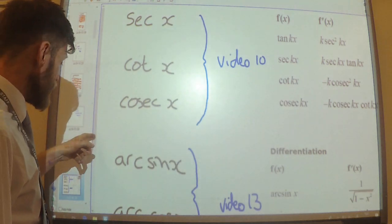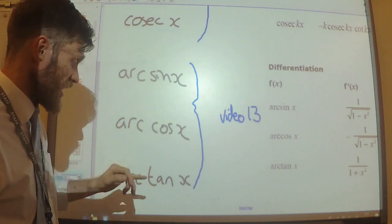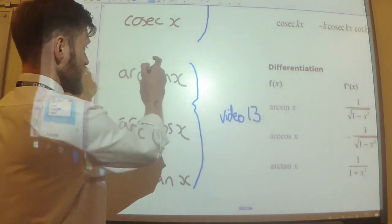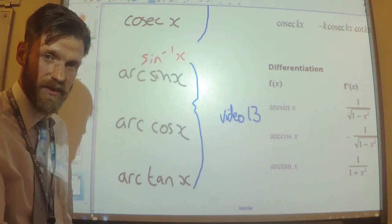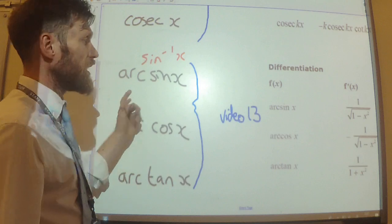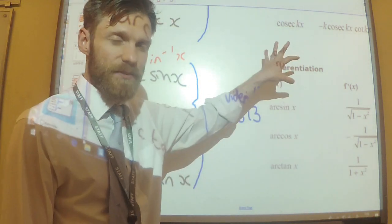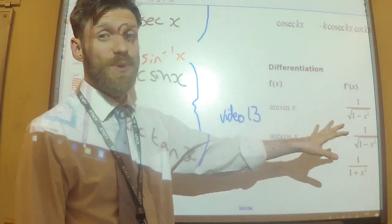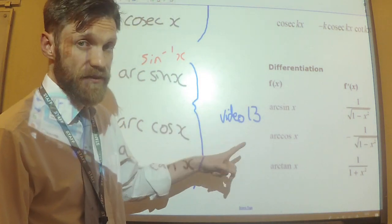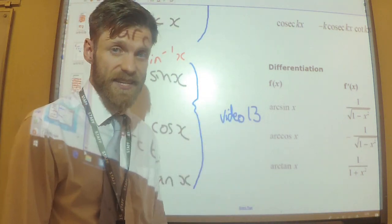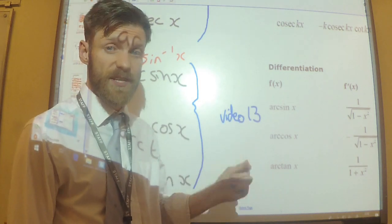Also, the inverse trigonometric functions: differentiating arc sine, arc cos, and arc tan — remember these are the same as sine inverse, cos inverse, and tan inverse. You are given the derivatives of those on the formula sheet as well — they're in the further maths formula sheet. But you do need to know how you get these, and you'll learn that in video 13. That's how you differentiate sine and cos from first principles, and all of the other trigonometric functions as well.